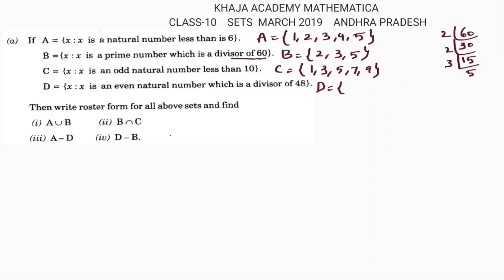Finding even natural number divisors of 48: 2, 4, 6, 8, then 12, 16, 24, and 48. So the elements of set D are {2, 4, 6, 8, 12, 16, 24, 48} — these are all the even natural numbers which are divisors of 48.